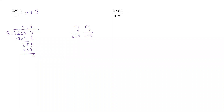The next one, we have a decimal we have to worry about. Because of that, we have to move that decimal place two spots in the denominator to make it a whole number. We also have to move it two spots in the numerator to keep things equal. So now we have 29 into 246.5.